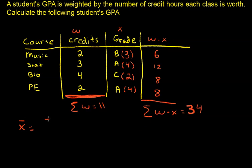X bar is going to be the sum of the weights times the grade divided by the total sum of weights. Basically the sum of the weights is the total number of credits that they took. There are two credits that were B's, three credits that were A's, four credits that were C's, and two credits that were A's. So the total number of credits that they took is 11, so that's why it gets to be in the denominator. Sort of like how the total sample size in a normal sample mean would be in the denominator.